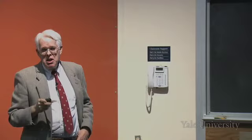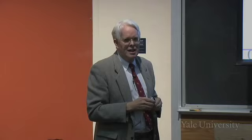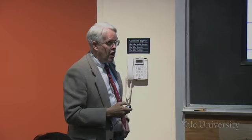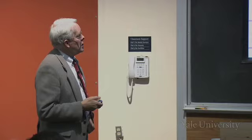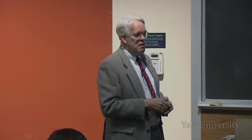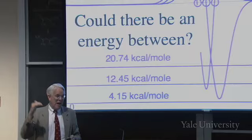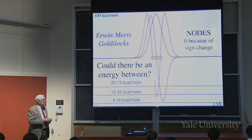Could there be an energy in between? Yes — one peak above and one below the baseline: that gives an intermediate energy with one node. A node is where the wave function is exactly zero because it's going from positive to negative — it must pass through zero. Out at the edges the wave function is very small but not zero; that's not a node. A node is where it's zero because it's changing sign.